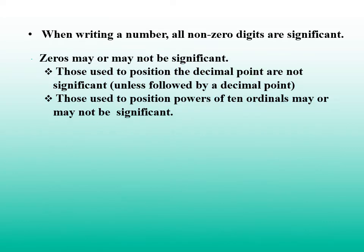So, how do we know the exact number of significant figures? Here is the rule. When writing a number, all non-zero digits are significant. Zeros may or may not be significant, unless followed by a decimal point. Those used to position the decimal point are not significant. Those used to position powers of ten ordinaries may or may not be significant.